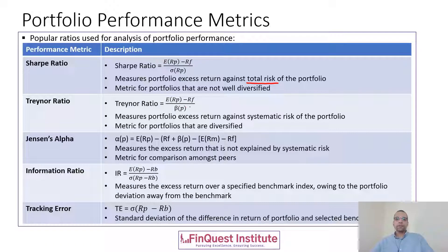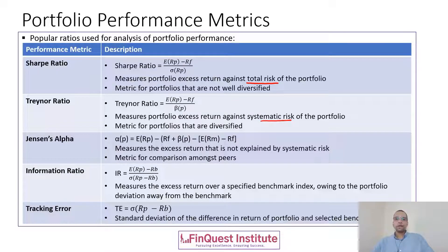Next is the Treynor ratio. The Treynor ratio looks very similar to the Sharpe ratio — the numerator is the same, measuring excess return — however the denominator is different. The Treynor ratio is measured against systematic risk only. As you can see, we use beta in the denominator, so we are taking only systematic risk and not unsystematic risk in the calculation.